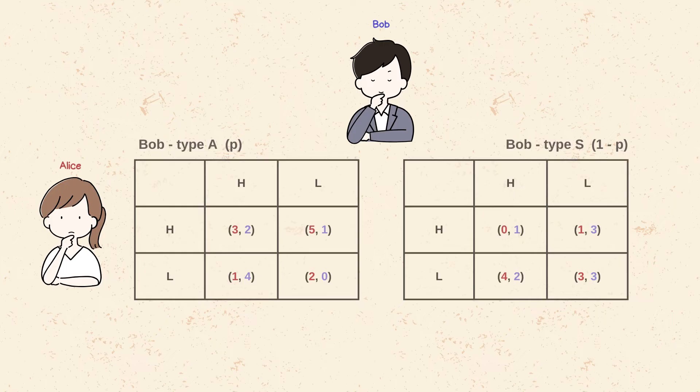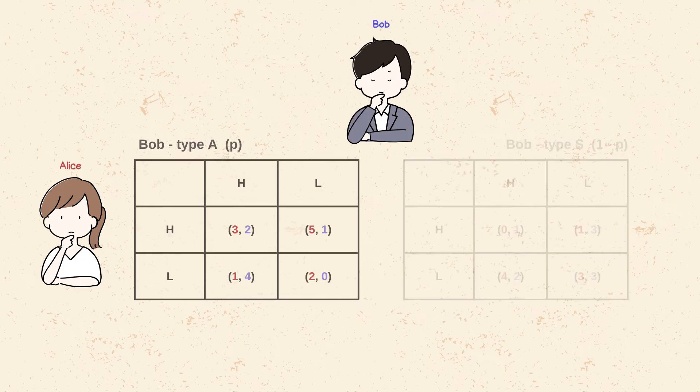And for that, we shall see from Bob's perspective. Bob knows for sure which type he is. If he is of type A, his dominant strategy is to bid high. Therefore, we can eliminate the low bid option from this type.